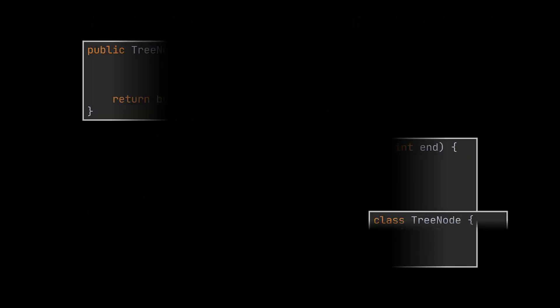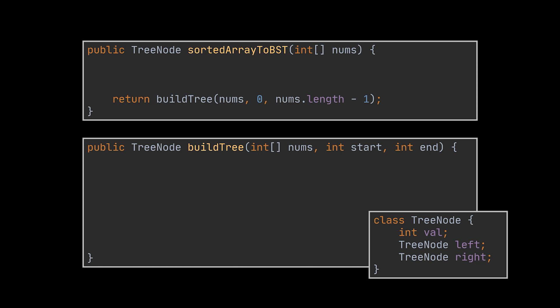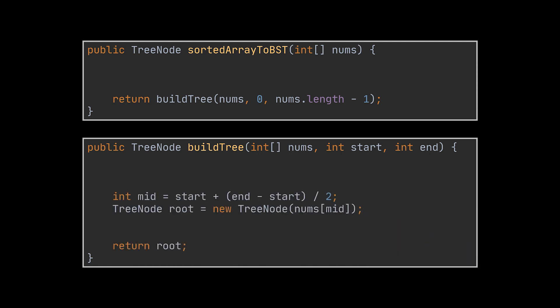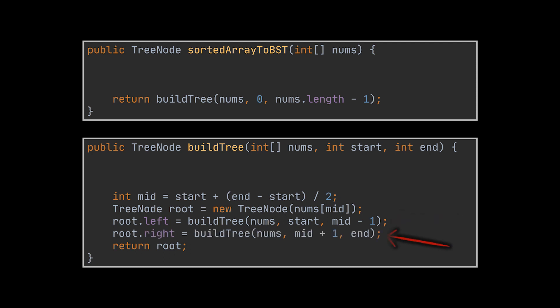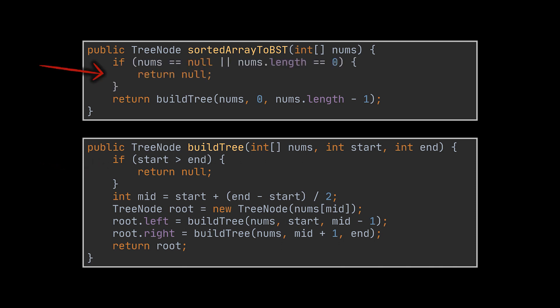One way to implement this solution is by using recursion. Our recursive method will take a starting and an ending index, which at first will be the minimum and maximum delimiters of our array. Inside this method, we will fetch the middle element and set it as the root of the current tree or subtree. Then the left subtree of this root node will be constructed from the left sub-array using the same method, and the right subtree will be made of the right sub-array elements. As with all recursive methods, do not forget your breaking condition, and also add a couple conditions at the start to account for edge cases.